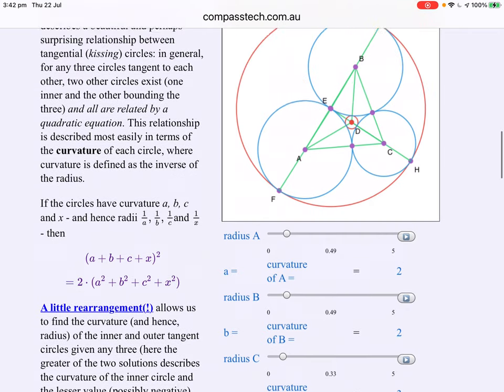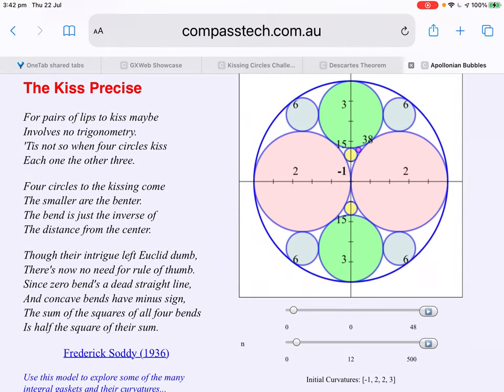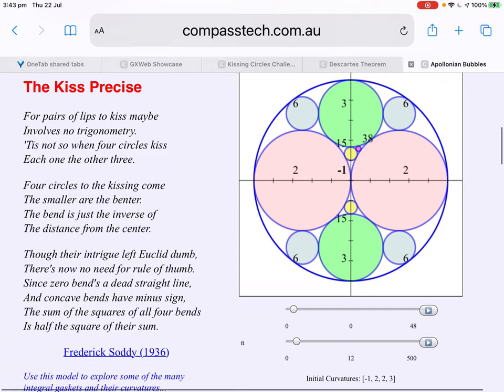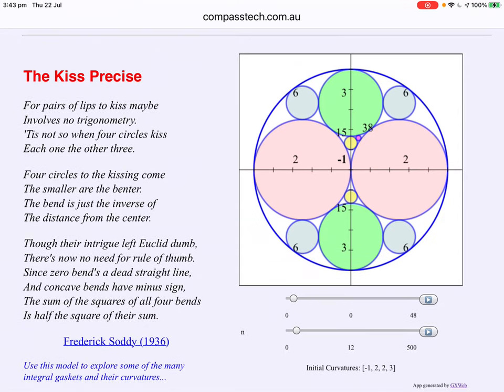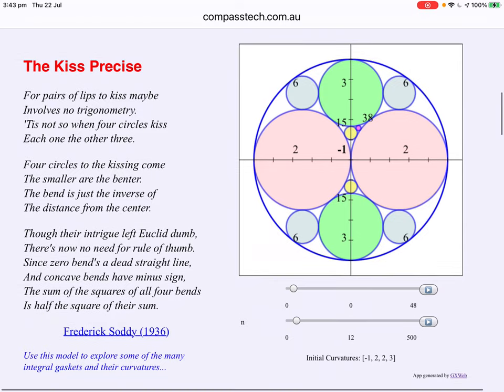Which actually goes to explain our friend's poem. For pairs of lips to kiss maybe involves no trigonometry. But tis not so when four circles kiss each one the other three. Four circles to the kissing come, the smaller are the benter. The bend is just the inverse of the distance from the centre. Though their intrigue left Euclid dumb, there's now no need for rule of thumb, since zero bends are dead straight line and concave bends have minus sign. The sum of the squares of all four bends is half the square of their sum. Soddy was so impressed with Descartes' work that he wrote a poem about it.